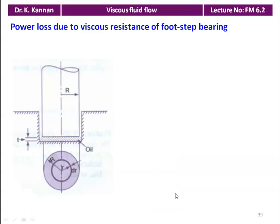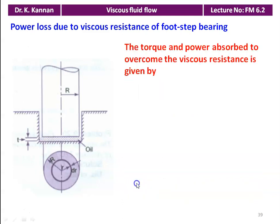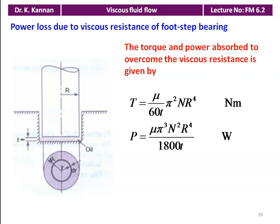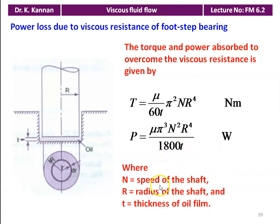For power loss due to viscous resistance in a footstep bearing: the footstep bearing has a vertical rotating shaft with a thin layer of oil between the shaft and the fixed bearing. The torque is T = (μ/60t)·π²N·R⁴ Newton-metres, where R is the radius. The power absorbed is P = 2πNT/60 = μπ³N²R⁴ / (1800t) watts, where N is speed in rpm, R is radius of the shaft, and t is the thickness of the oil film.